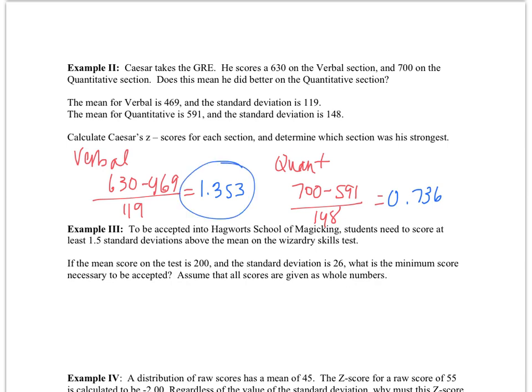What this tells me is that he did much better on his verbal section. Compared to his peers, he scored 1.3 standard deviations above the average. When we think about those percentages, 34% are here, 13.5% are here. So he definitely scored greater than the 84th percentile. Whereas on quantitative, he didn't even break that 84th percentile barrier.